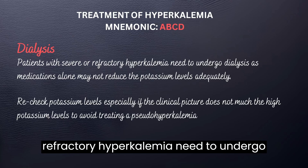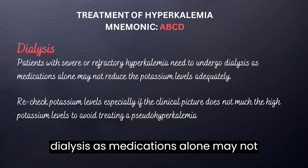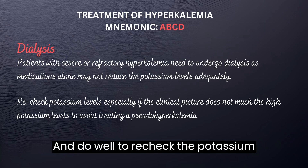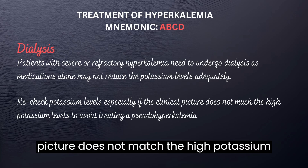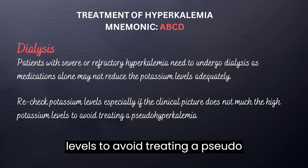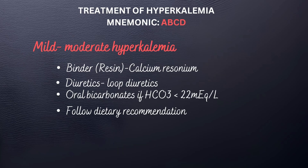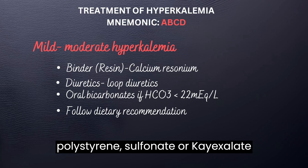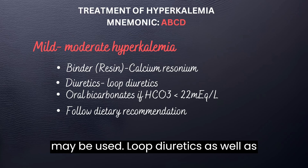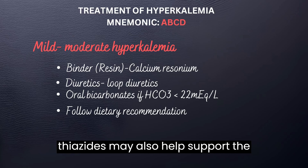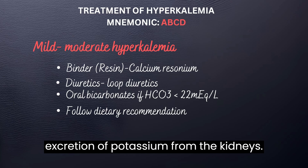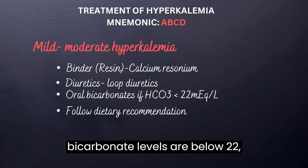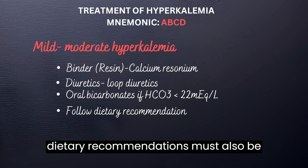Patients with severe or refractory hyperkalemia need to undergo dialysis, as medications alone may not reduce the potassium levels adequately. Do well to recheck the potassium levels, especially if the clinical picture does not match the high potassium levels, to avoid treating a pseudo-hyperkalemia. In the treatment of mild to moderate hyperkalemia, resins such as calcium polystyrene sulfonate or K-exalate may be used. Loop diuretics as well as thiazides may also help support the excretion of potassium from the kidneys. Oral bicarbonates may also be used if the bicarbonate levels are below 22. Dietary recommendations must also be strictly followed.